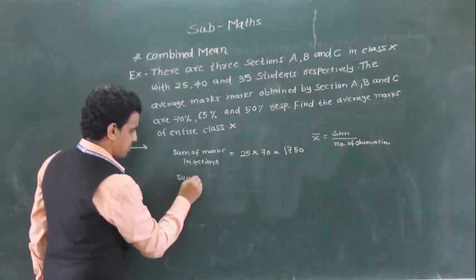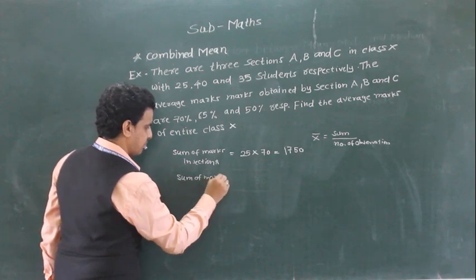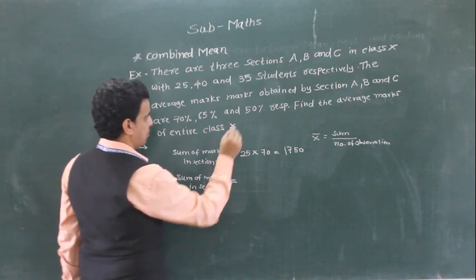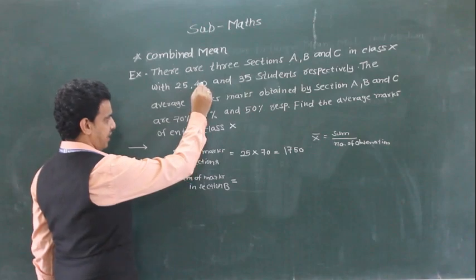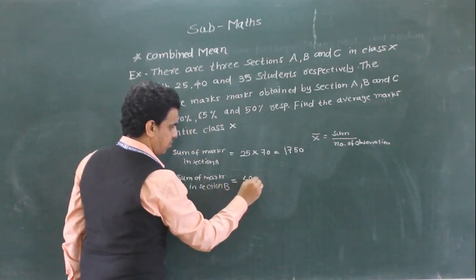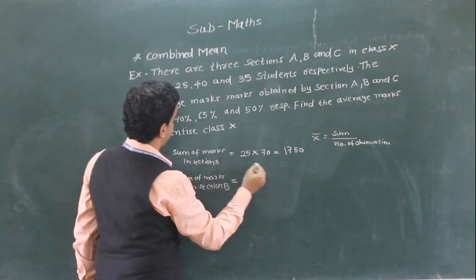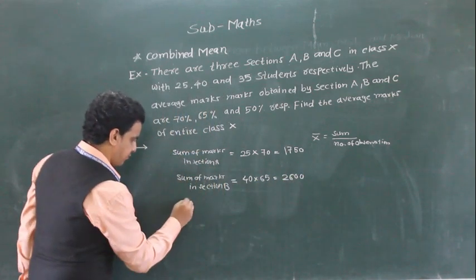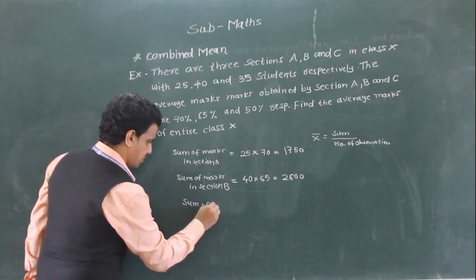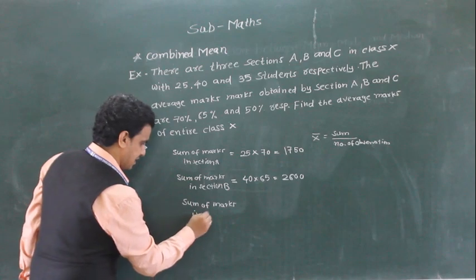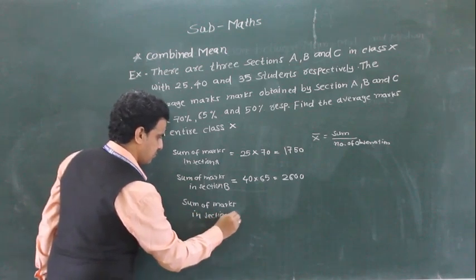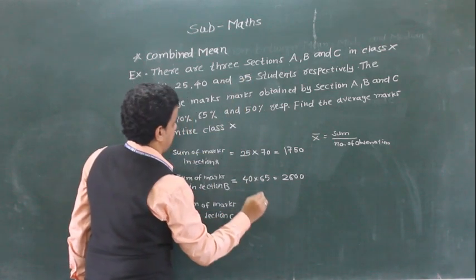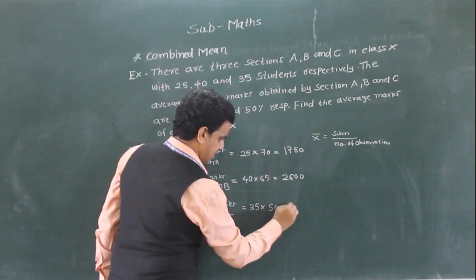Similarly, sum of marks of students in section B: in section B, 40 students are there and average marks is 65%. So sum of marks is 40 into 65, which is equal to 2600. And sum of marks in section C: 35 students in section C, 35 into 50, which equals 1750.